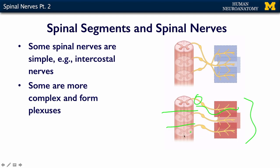These would represent things in your thorax — for example, what we call your intercostal nerves. They come out, run around the edge of the rib, and then give off little branches to your sides and then to your anterior chest.